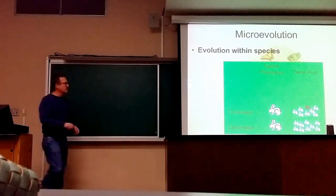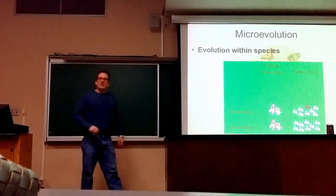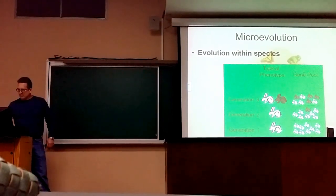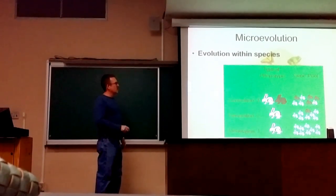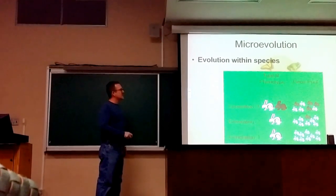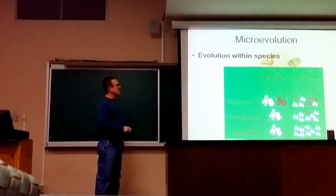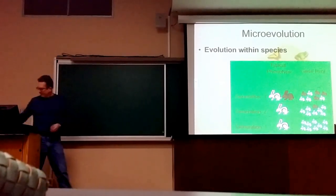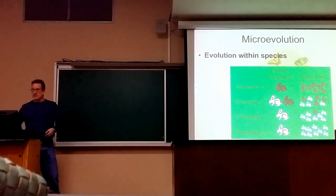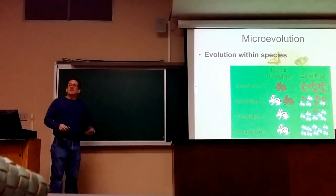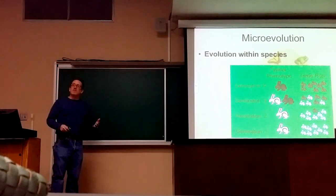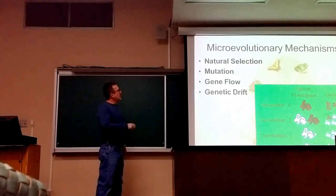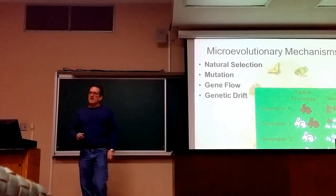Maybe in the next generation we have a dark rabbit. That dark rabbit can come about in two different ways we'll talk about in a minute. And maybe in a subsequent generation, the frequency of the dark rabbits is increasing — now the typical phenotype can't be said to be one or the other; both are pretty much evenly represented. And perhaps in future generations this phenotype is going to go to fixation, so it's the only phenotype in the population. That's a simple example of evolution that could encompass all four evolutionary mechanisms.